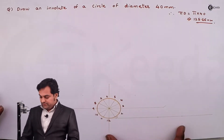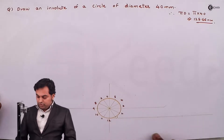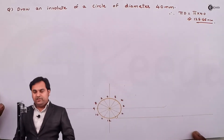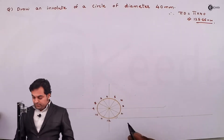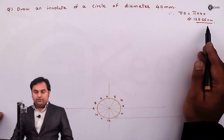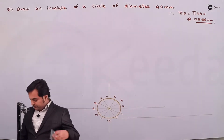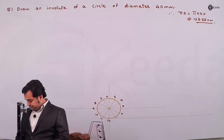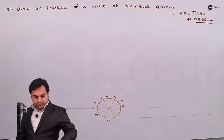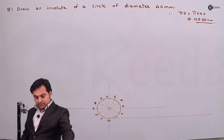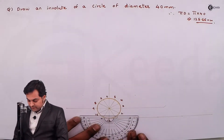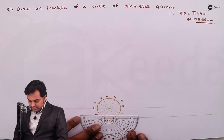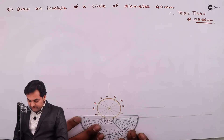Similarly, the circumference line also needs to be divided into 12 equal parts. The total circumference length is 125.66mm. To do this, I'll draw an acute angle — less than 45 degrees, such as 15, 20, or 25 degrees — and divide the circumference along it.